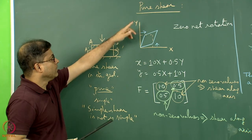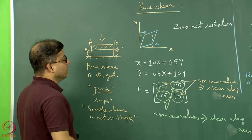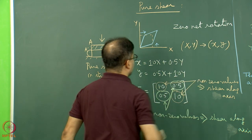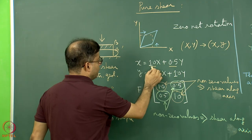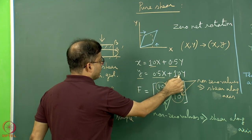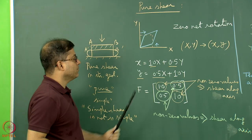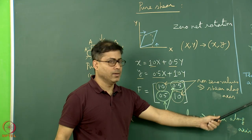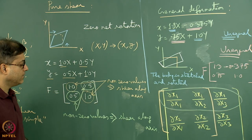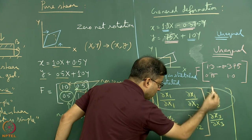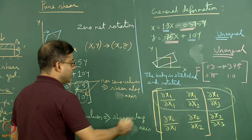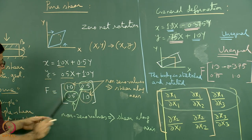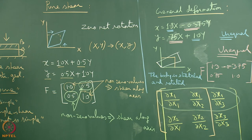Back to the point: pure shear can be represented by coordinates on the material. Say x and y before deformation become small x and small y after. For example: small x = 1·X + 0.5·Y, small y = 0.5·X + 1·Y. Note these two off-diagonal numbers are the same. Applying the Jacobian matrix (ignoring the third dimension), we find the Jacobian as [1, 0.5; 0.5, 1] for the pure shear example.